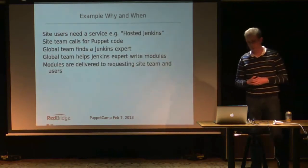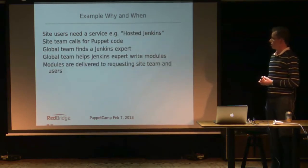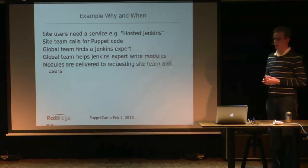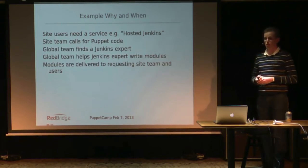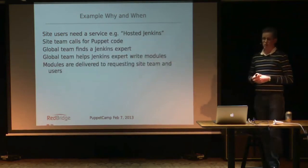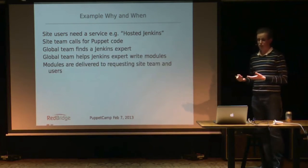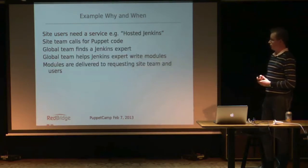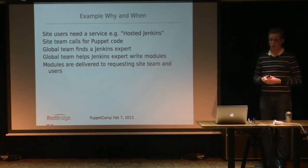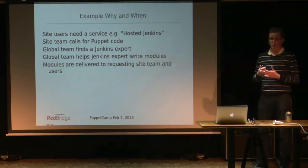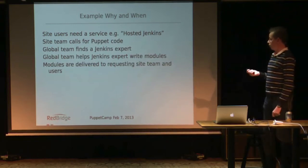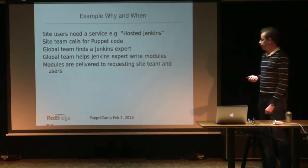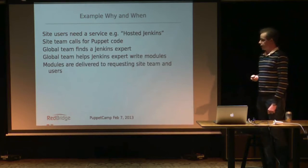Here's an example of how Puppet code development happens. Site users on one of the 10 sites need a service configured — they say 'we want hosted Jenkins, we need you administrators to set it up.' The site team calls out to the global team for Puppet code, saying 'we need Puppet code for this, we don't really know what it is — do you know anyone who knows this?' The global team asks around, finds a Jenkins expert. He may not be the best at writing Puppet code, but he is very good at Jenkins. So from the global team we help him write a module that will work hopefully for those who asked and also globally, then deliver it to the site team. Everybody's happy.